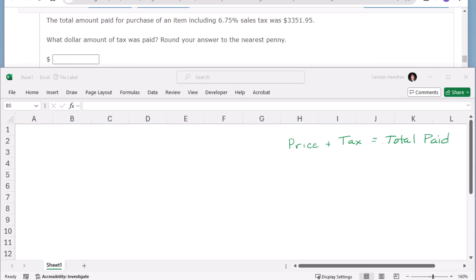The total amount paid for purchase of an item, including 6.75% sales tax, was $3351.95. What dollar amount of tax was paid? Round your answer to the nearest penny.